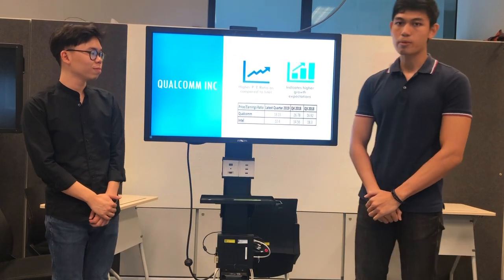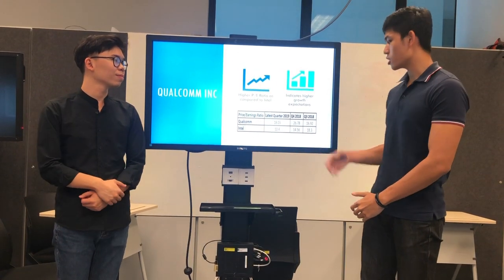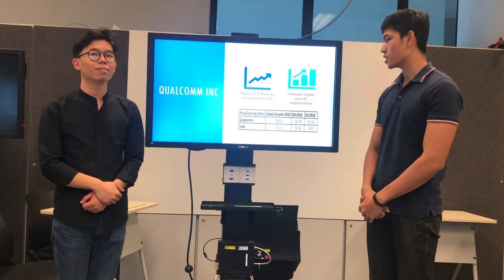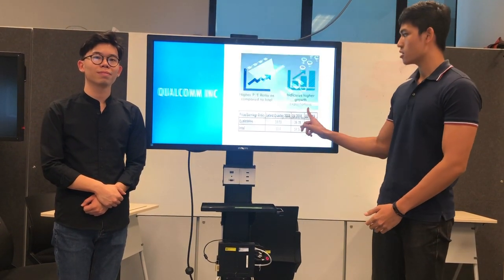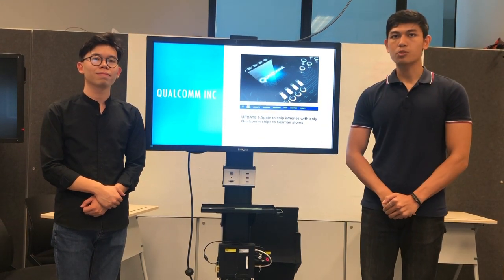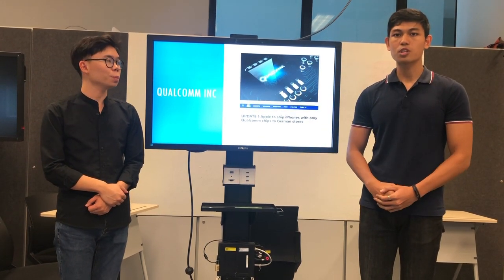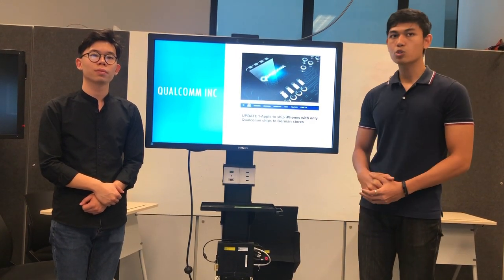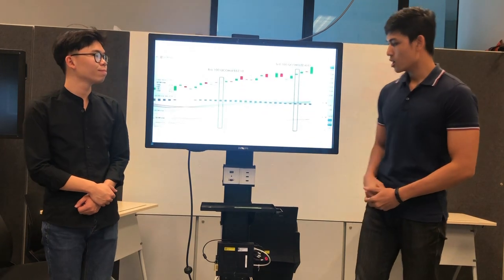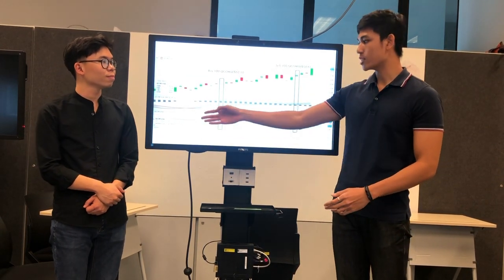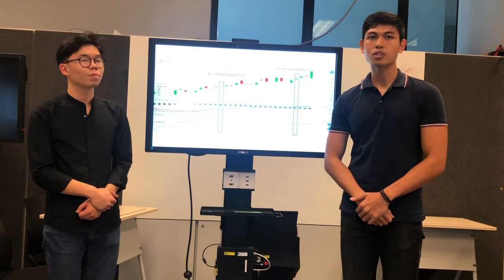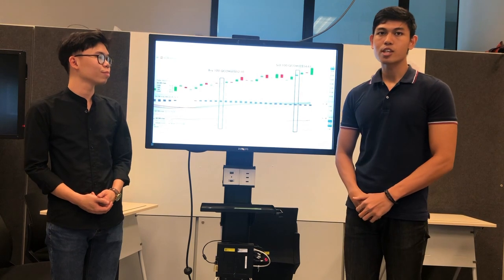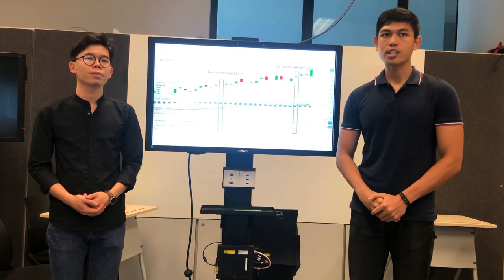Looking at their PE ratios over the past three quarters, we can see that after the third quarter of 2018, Qualcomm has performed over Intel over the last two quarters, indicating a higher growth expectation. But recently, it has been involved in a long-running legal dispute with Apple, one of its partners, with stock prices fluctuating with each legal battle. So when we saw a victory in Germany against Apple on the 14th of February, we looked to buy the stock. You see a bullish crossover on the 7th, with the MACD line crossing over the signal line, and a widening gap which shows a continued uptrend. On the 19th, we decided to buy 100 shares at $52.10.